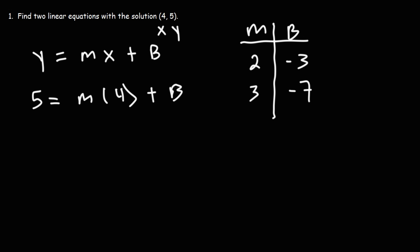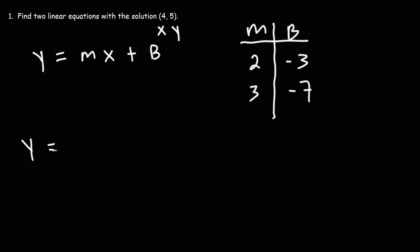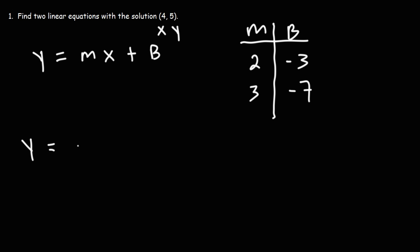Now that we have our m and b values, we can write the two equations. In the first equation, I'll replace m with 2 and b with negative 3, giving us y = 2x − 3. The other equation uses m = 3 and b = negative 7, giving us y = 3x − 7.